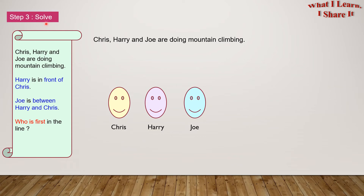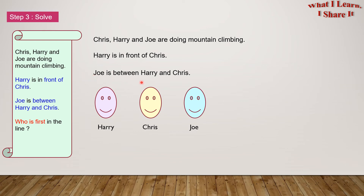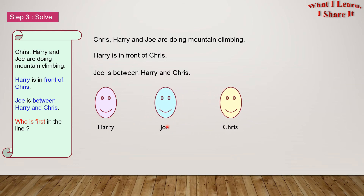Step 3: Solve. Let's take this problem step by step. Chris, Harry, and Joe are doing mountain climbing — so here's Chris, Harry, and Joe. Harry is in front of Chris, so let's make Harry in front of Chris. Joe is between Harry and Chris, so let's make Joe between Harry and Chris. Who is first in line? We can see that Harry is first in line.